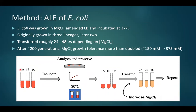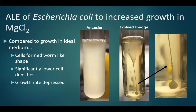The brief method was to grow E. coli in LB in three lineages, incubating them, checking for CFUs as well as phenotype on agar plates, tracking ODs over time, and storing samples at minus 80°C. At every subsequent transfer, I increased the magnesium chloride concentration and repeated the process. After about 200 generations, growth tolerance nearly doubled through the course of ALE.